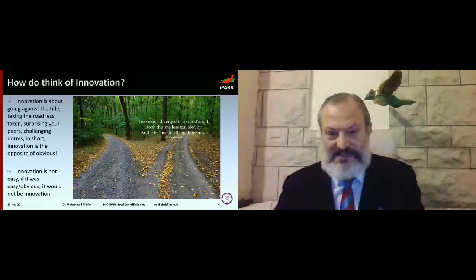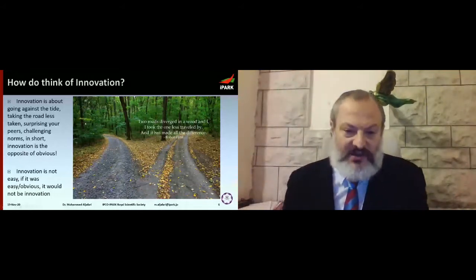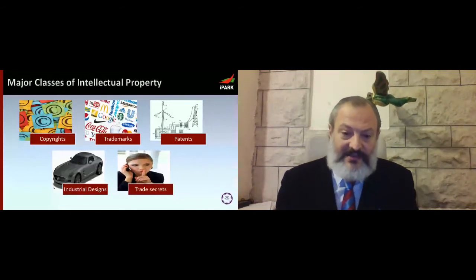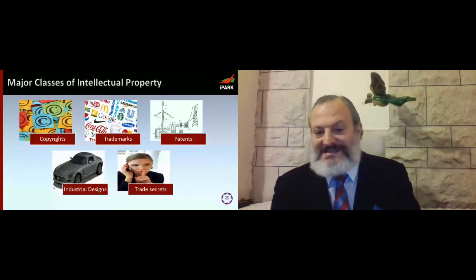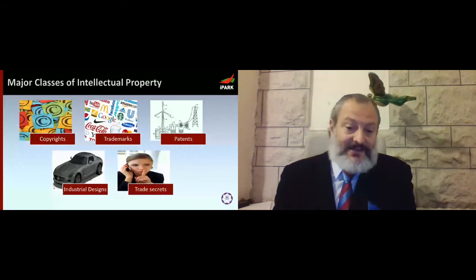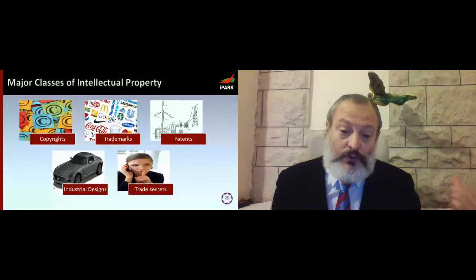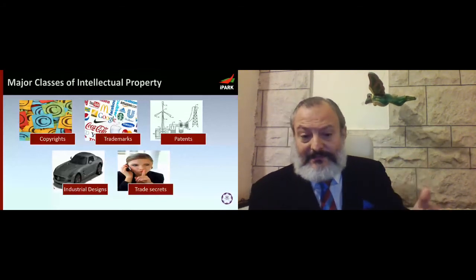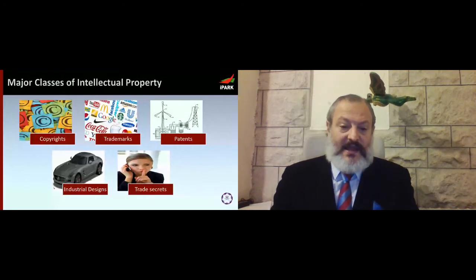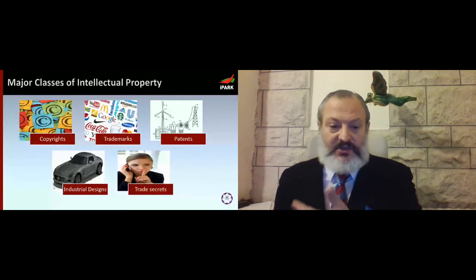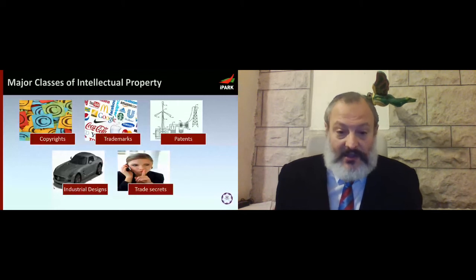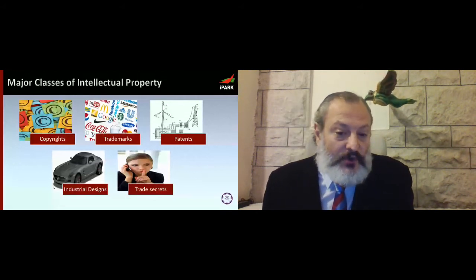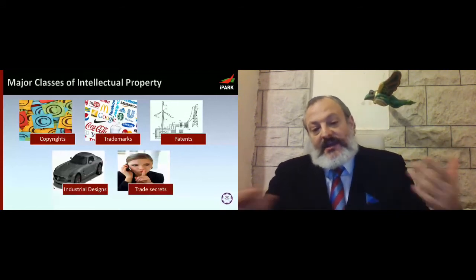The most common type of intellectual property you're probably aware of is copyright. If somebody writes a novel, they own the rights to it — you're not allowed to copy a book and sell it because someone else has the right to sell that. It used to be that software was protected by copyright — not anymore, and we'll talk about that shortly. Trademarks are also very common: if something carries a name people recognize — McDonald's, Gucci, Toyota — that's a trademark.